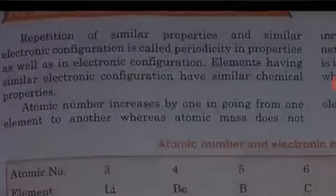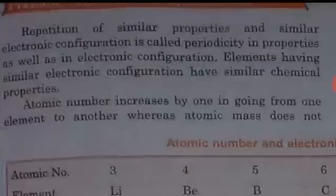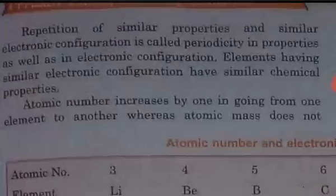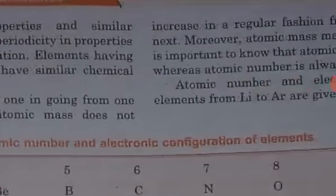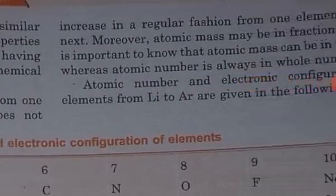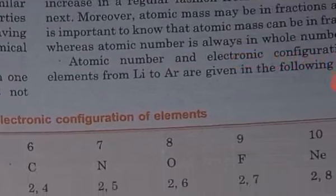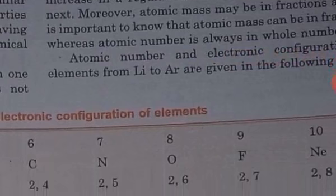According to this law, the physical and chemical properties of elements are a periodic function of their atomic number. That is, if elements are arranged in order of their atomic numbers, similar elements are repeated after a regular interval. This repetition of similar properties and similar electronic configuration is called periodicity in properties as well as in electronic configuration.